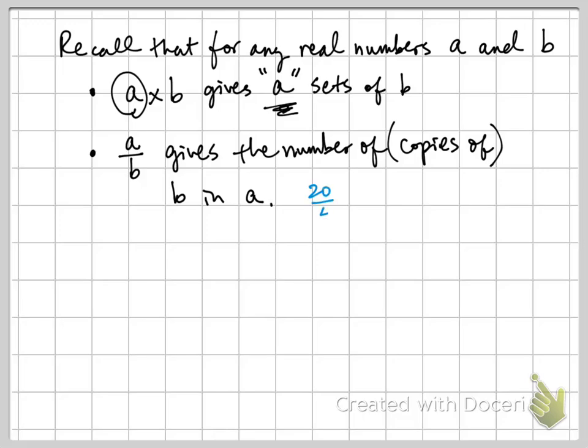For example, 20 divided by 4 is equal to 5. And we read this as there are 5 copies of 4 in 20. Next, we'll focus on building intuitions of the size of simple expressions to be able to mathematize more complex context.